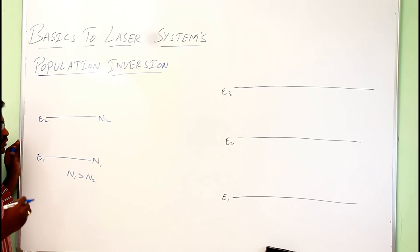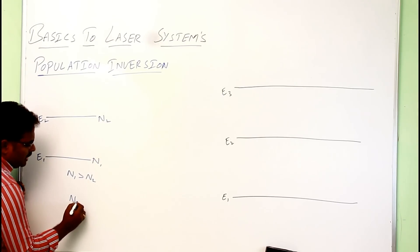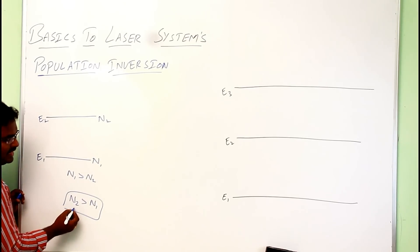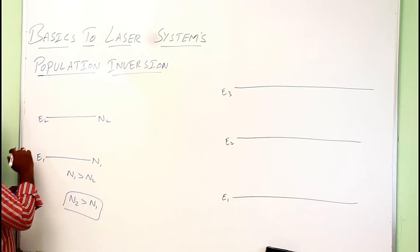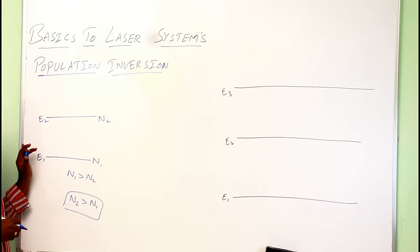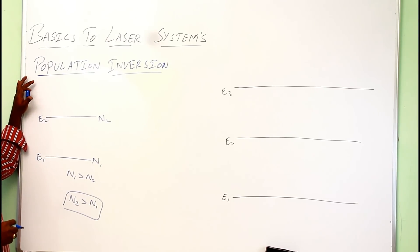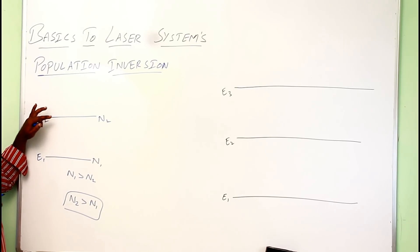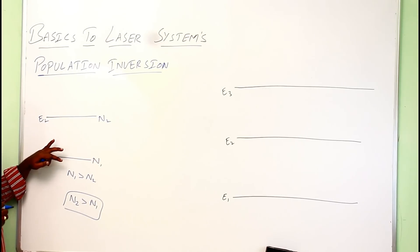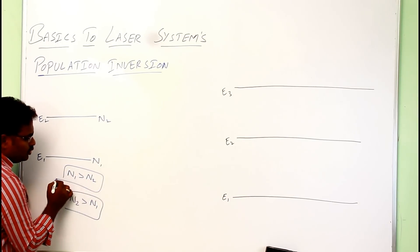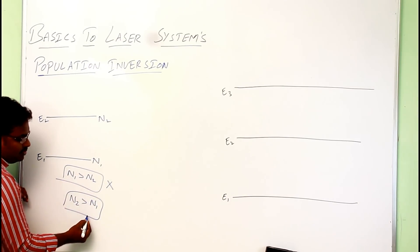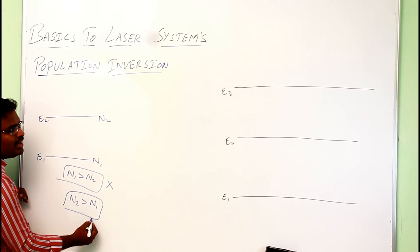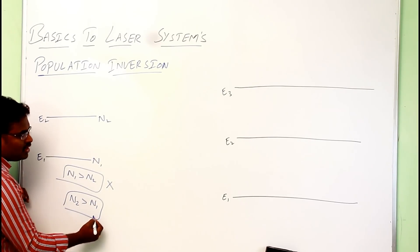To produce the stimulated emission process, the number of electrons in the excited state should be greater than in the ground state. Maintaining more electrons in the excited state than in the ground state is known as population inversion. In general we have n1 greater than n2, which is not what we want — we have to maintain n2 greater than n1.